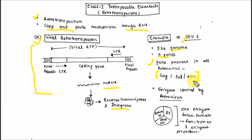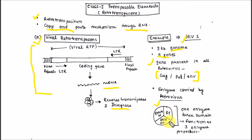A very important enzyme has three domains: one domain acts as a reverse transcriptase, one is RNase H that degrades the mRNA from the RNA-DNA hybrid, and the third domain acts as a DNA polymerase.